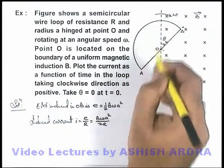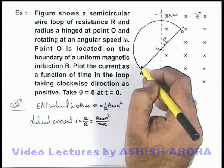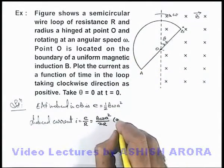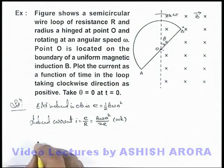As soon as OA enters, A will be the high potential point and clockwise current starts flowing. So initially it was anticlockwise.